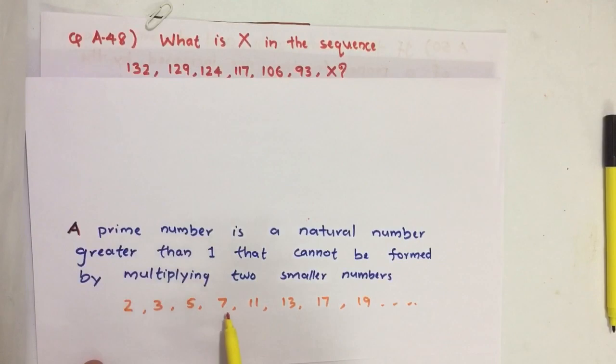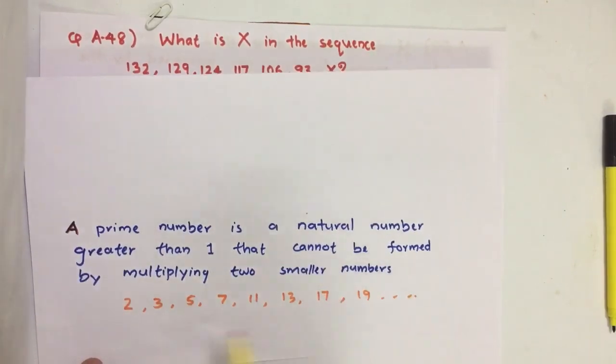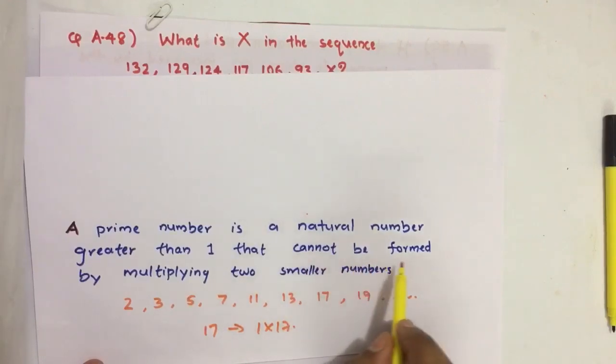For example, the smallest prime number is 2, then 3, 5, 7, 11, 13, 17, 19. Here 17 is a prime number we know. So this we can write as a product of only 1 and 17. But what is the definition? The prime number which cannot be formed by multiplying two smaller numbers. So here 17 is itself, so it's a prime.